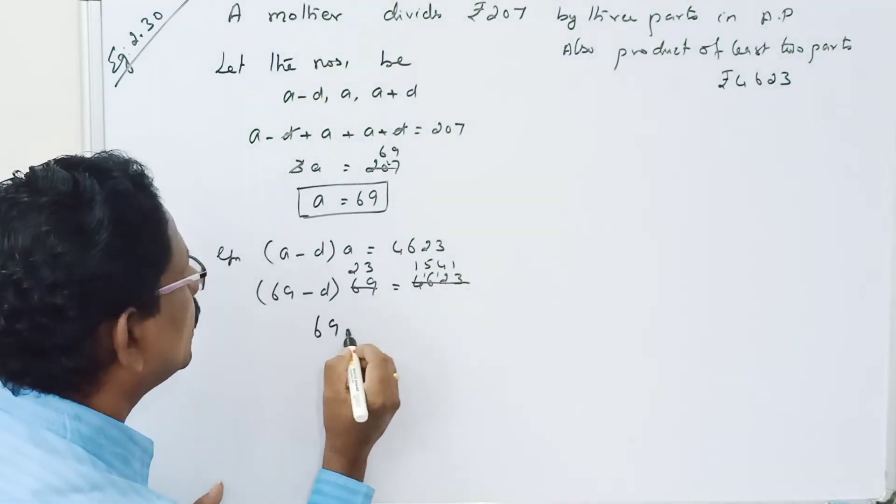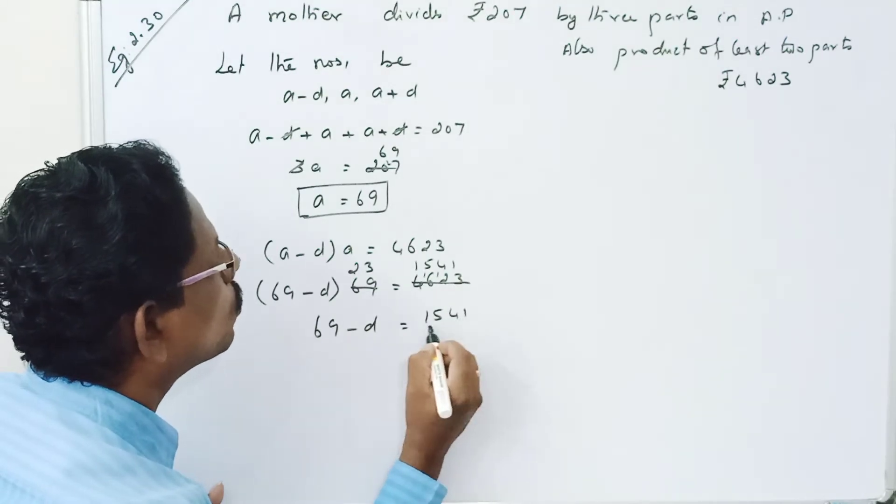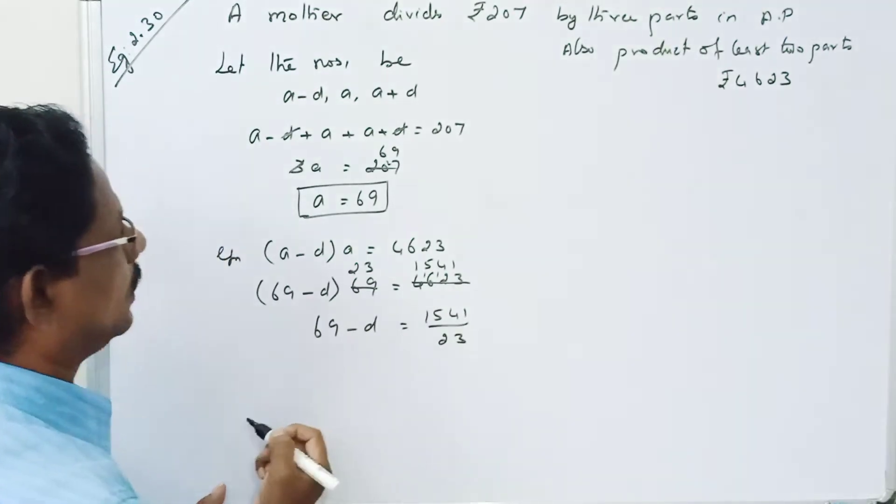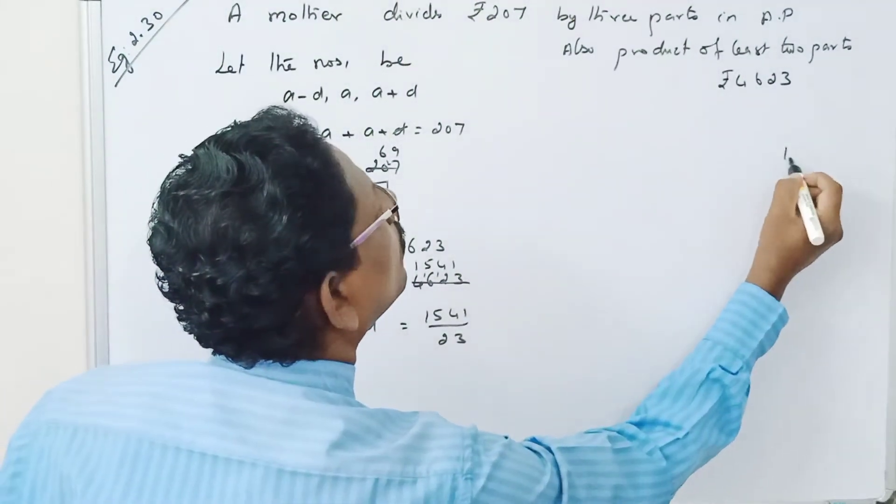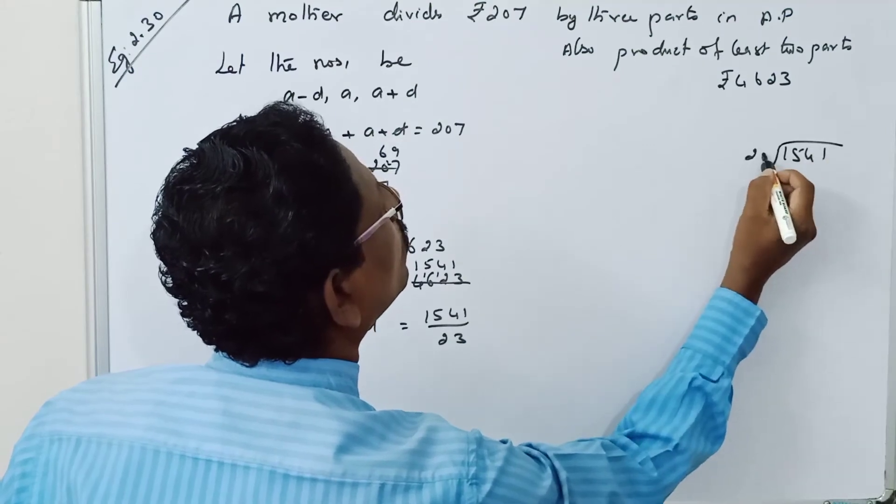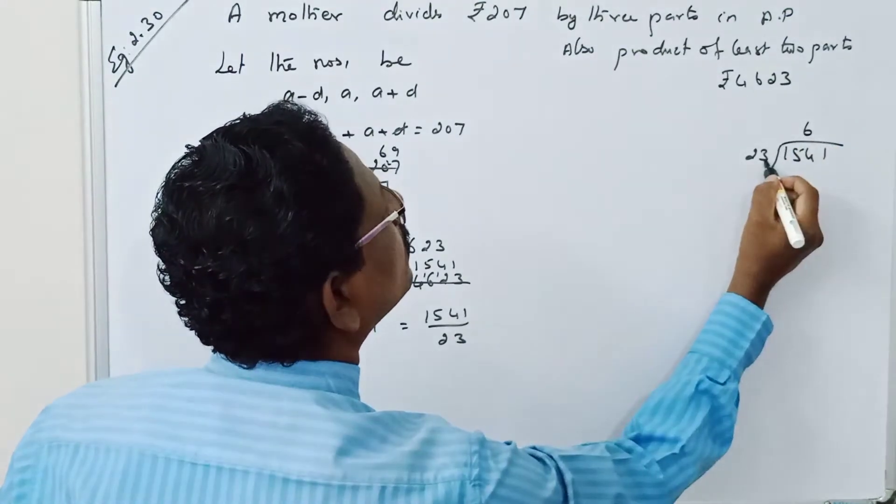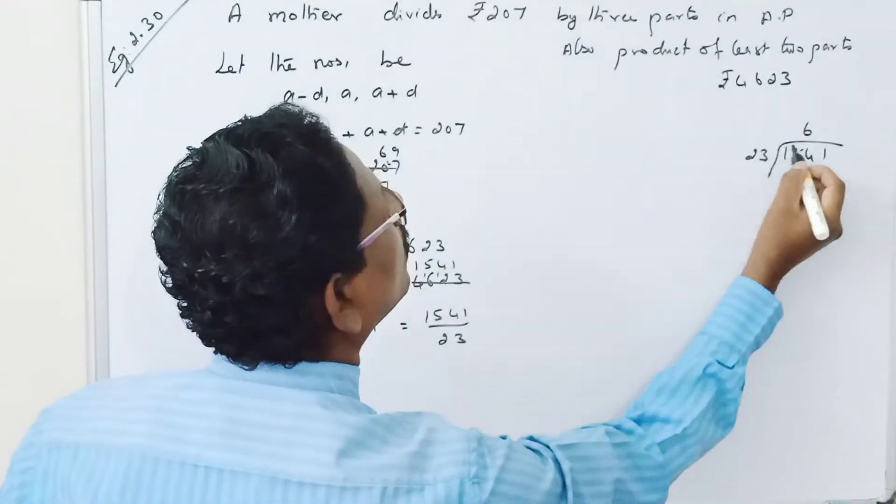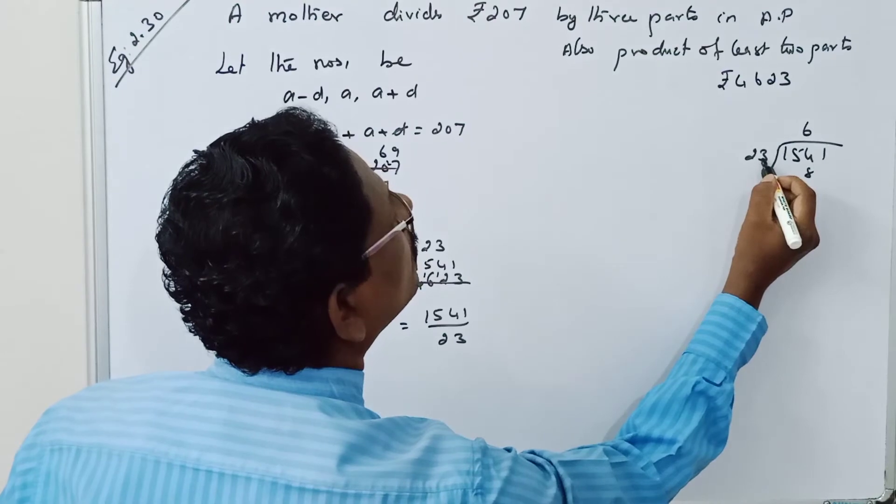1541 divided by 23. 6 times 23: 6 threes are 18, carry 1. 6 twos are 12, plus 1 is 13. That's 138.